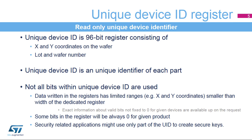The unique device identifier is a 96-bit register created from the coordinates of the die on the wafer, lot number, and wafer number, with a certain number of bits reserved for each of those records. This identifier is unique for each part manufactured by ST. As each record within the unique identifier has some range, like X and Y coordinates, not all the bits in the device ID are used.